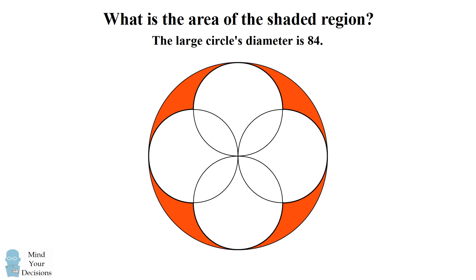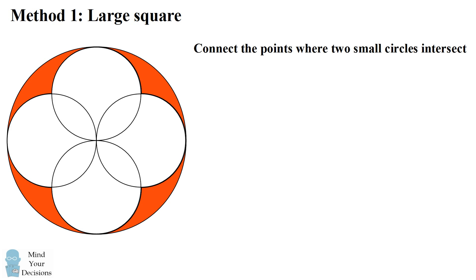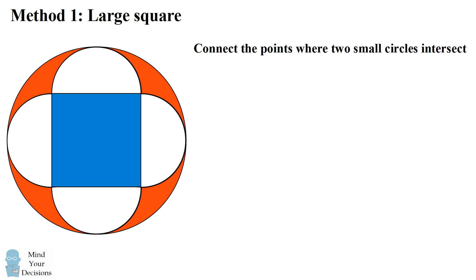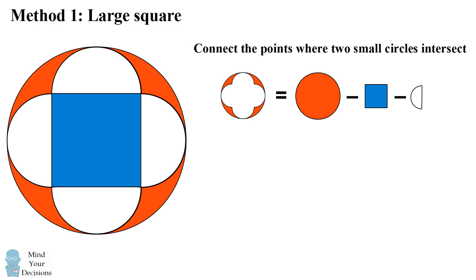This problem can be solved in many different methods, and in this video I'm going to present three of them. In the first method, we're going to construct a large square by connecting the points where exactly two of the circles intersect. What's useful about this square is that it's going to cover up the regions in which these circles overlap. So we can now calculate the area that we need to remove by considering the areas of five different shapes which do not overlap. In particular, the shaded area is equal to the area of the large circle minus the area of the square minus the area of four semi-circles.